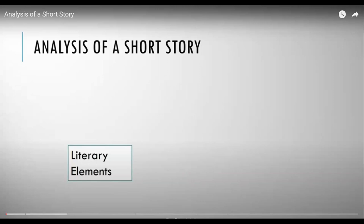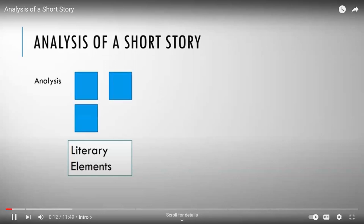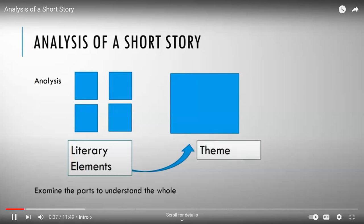We'll be looking at how to analyze a short story. The definition of analysis is examining the parts to understand the whole. We look at all the little pieces — in this case, we are looking at the literary elements that are talked about in Chapter 6 — and we use those to help us understand the theme of the story, the concept that the whole story revolves around. Remember, stories have meaning. The meaning we are looking for right now is the theme, the universal concept the story revolves around. We are examining the parts to understand the whole: the theme.